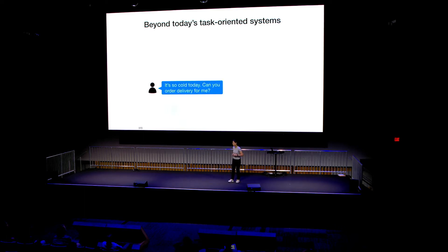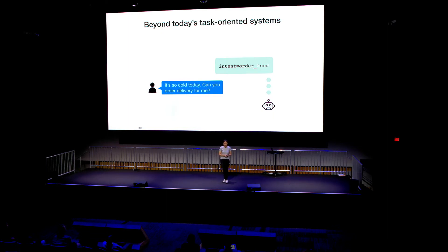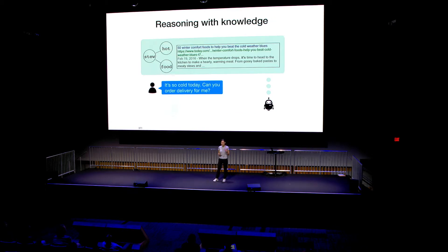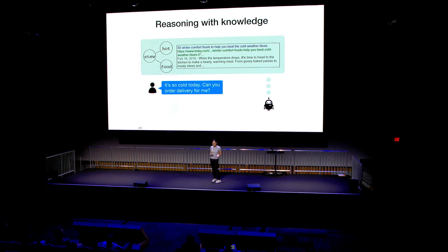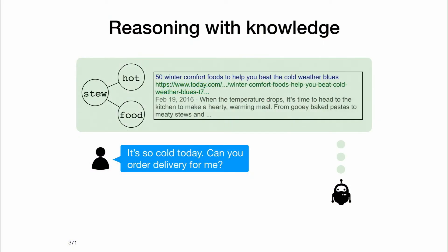Here's an example. If the user says, 'It's so cold today, can you order delivery for me?' our bot immediately knows that the intent is to order food, and it can respond with 'What would you like to order?' This is fine. But imagine the bot has access to some knowledge — represented either as a structured database or unstructured text retrieved from the web. Now it might do some simple reasoning and figure out that because it's cold, the user might want some hot comfort food. So it can suggest, 'Would you like some beef stew?' — a much more efficient response to achieve the user's goal.